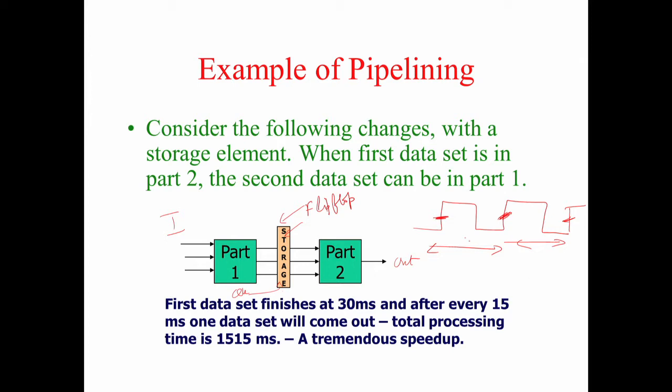In clock k, the data enters. In clock k+1, the intermediate results get stored in the flip-flop. In clock pulse k+2, the answer comes out. Between k and k+1, Part 1 was working while Part 2 was idle. Between k+1 and k+2, Part 2 was working while Part 1 was idle.